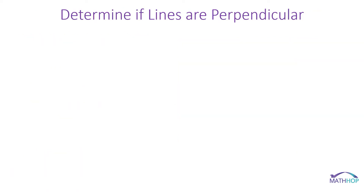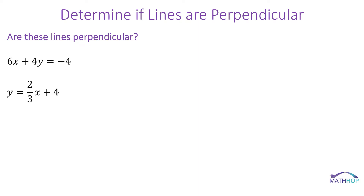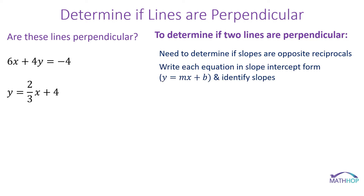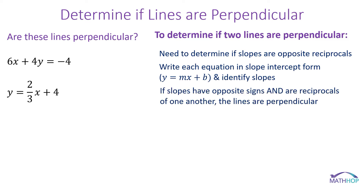Knowing that relationship, we can now determine if lines are perpendicular. To determine if two lines are perpendicular, you want to determine if the slopes are opposite reciprocals. I need a form of an equation that is easiest to identify slope — y equals mx plus b to the rescue. I will put each equation in slope-intercept form and determine if the slopes are opposite reciprocals.